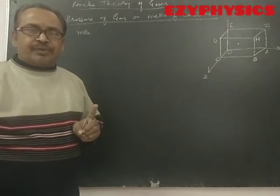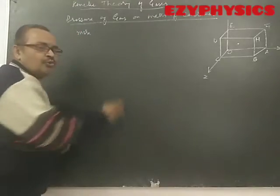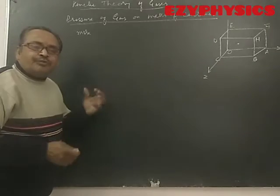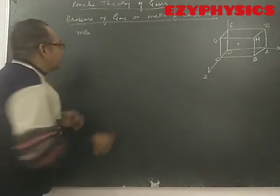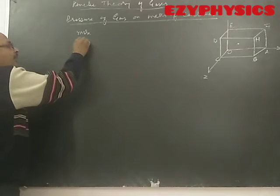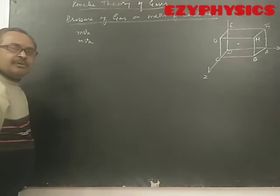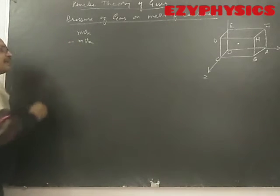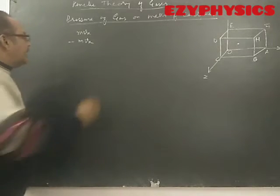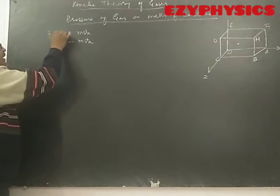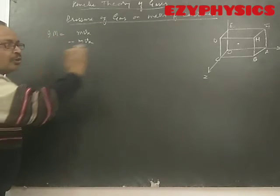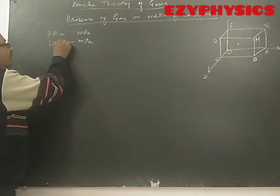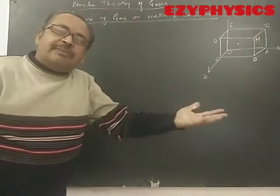This means the molecule will hit the wall and rebound back with the same momentum, but because the direction has changed, we write it as minus MVx. So the initial momentum of the particle going to hit the wall is plus MVx, and the final momentum of the particle which has rebounded back is minus MVx.